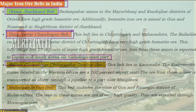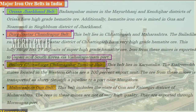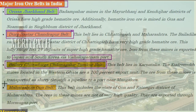The Bellary-Chitradurga-Chikmagalur-Tumkur belt lies in Karnataka. The Kudremukh mines located in the Western Ghats are a 100 percent export unit. The ore from these mines is transported as slurry through a pipeline to a port near Mangalore. Last is the Maharashtra-Goa belt.